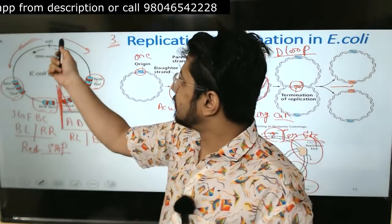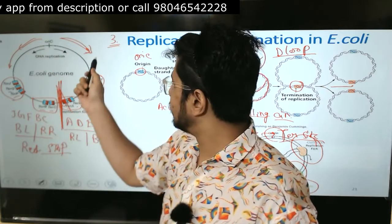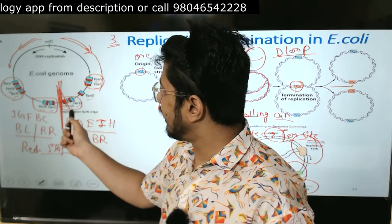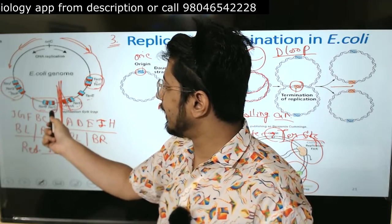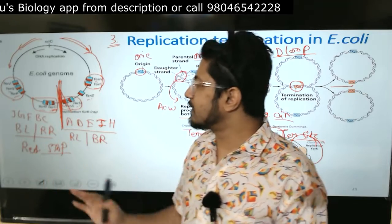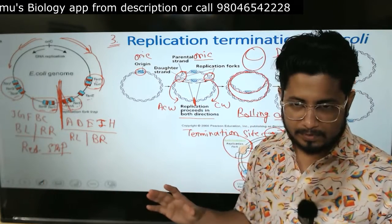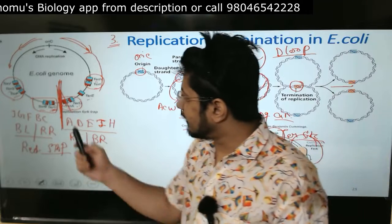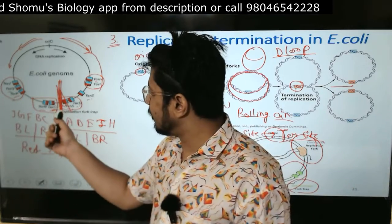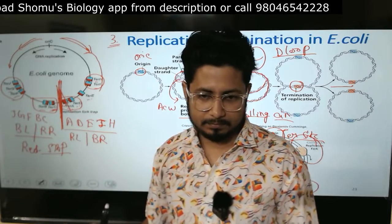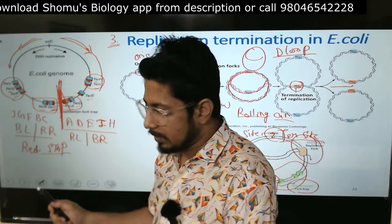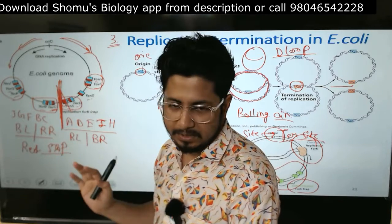Now the fork which is moving clockwise: ter H, ter I, E, D, A - first encountering red in C. So again they're stopping here. Basically the ter sites are arranged in such a way that there is ter C and ter A. Both of the forks will stop between ter C and ter A. They're arranged in such a way that both forks should stop between ter C and ter A sequence.